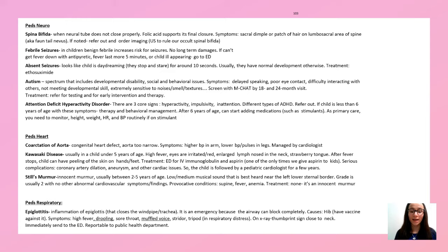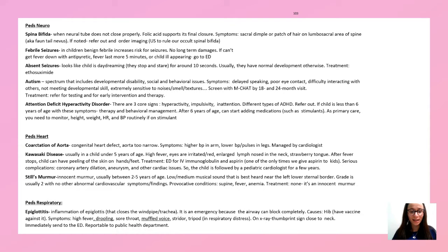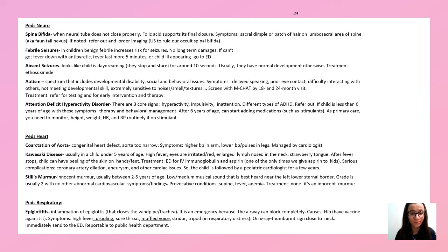Coarctation of the aorta is a congenital heart defect where the aorta is too narrow. Classic symptom: high blood pressure in the arms and lower blood pressure in the legs. Managed by cardiologists. Kawasaki disease is common in children under age 5. Main symptoms: very high fever and strawberry tongue. After the fever stops, peeling of skin on hands and feet. Treatment: refer to ED for IV immunoglobulin and aspirin — one of the few times we give a child aspirin. Can lead to serious cardiac complications, so follow up with cardiologist for a few years.